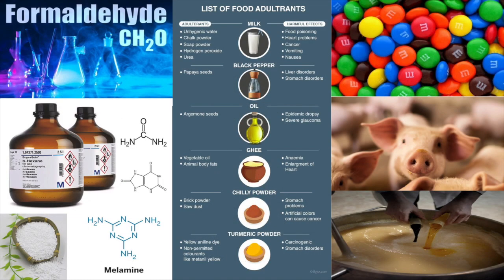Different adulterants and their harmful effects: in milk, adulterants include unhygienic water, chalk powder, soap powder, hydrogen peroxide and urea, and their harmful effects include food poisoning, heart problems, cancer, vomiting and nausea. In black pepper, papaya seeds are the adulterant, and their harmful effects include liver disorders and stomach disorders.